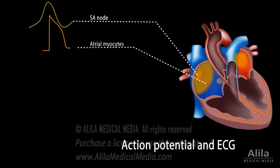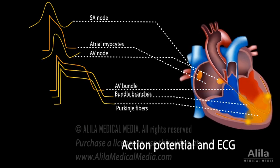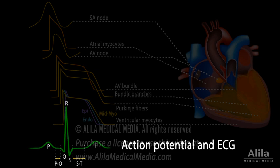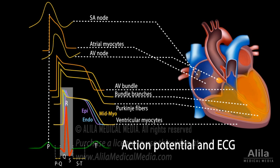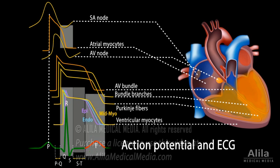While an action potential waveform reflects electrical activities in one single cell, an ECG is a composite recording of all action potentials produced by the cells of the heart, reflecting electrical activities of the heart as a whole. The P wave represents the sum of depolarization in all atrial myocytes. The QRS complex reflects ventricular depolarization; atrial repolarization also occurs during this time. The ST segment reflects the plateau phase of action potentials in ventricular myocytes — this is when the ventricles contract and pump blood. The T wave corresponds to ventricular repolarization that occurs immediately before ventricular relaxation.